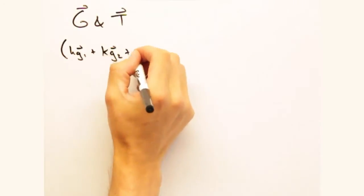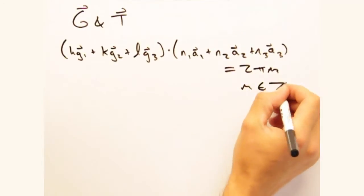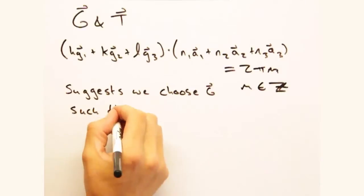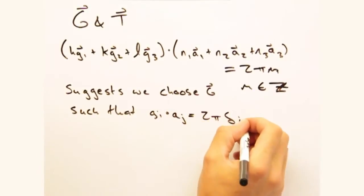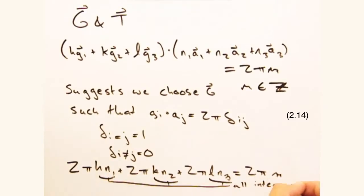So now that we have an expression for g and t, we can sub both into the dot product constraint we had before. And this suggests we choose our g vectors such that g sub i dotted with a sub j is two pi times the Kronecker delta, where it equals one when i equals j, and zero otherwise. Plugging this into our expression above, we see that every term is two pi times some integer.